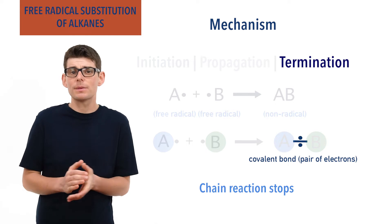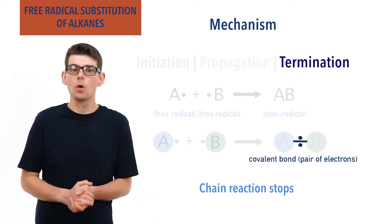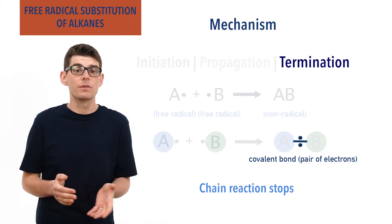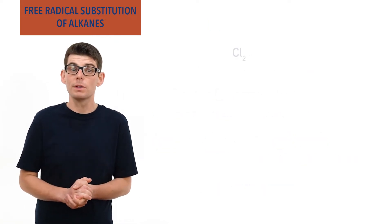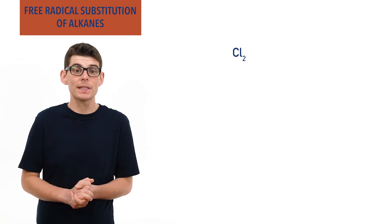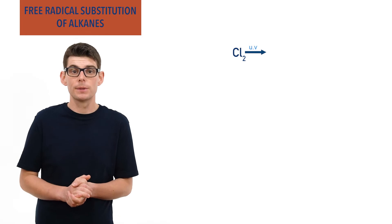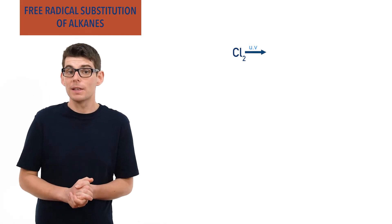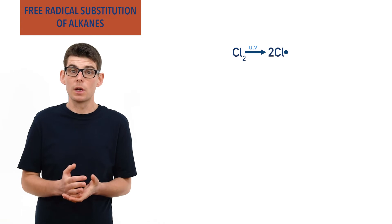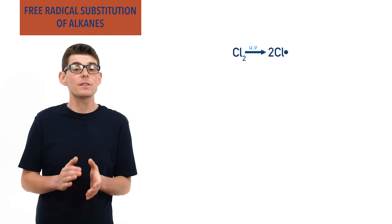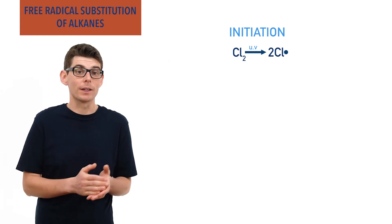These steps can seem quite daunting at first. Let's have a look at the mechanism for chlorine reacting with methane to see them in action. First, the covalent bond in a chlorine molecule has to break homolytically, and the energy needed is provided by ultraviolet light. Each chlorine atom gets an unpaired electron and two chlorine radicals are produced. This is the initiation step — we are creating radicals from a non-radical molecule.